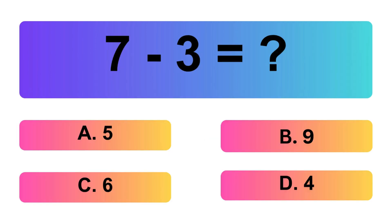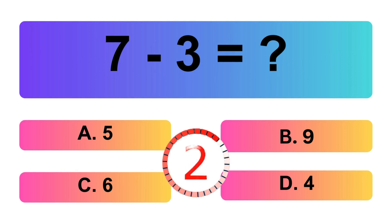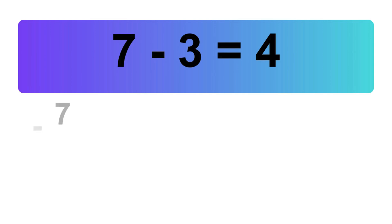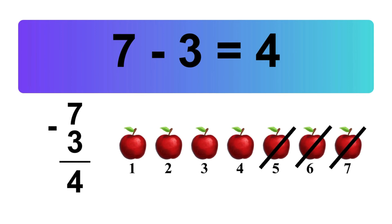7 minus 3 is equal what? Let's count it: 1, 2, 3, 4. So, the answer is 7 minus 3 is 4.